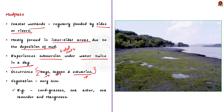Note that mud flats often have very less vegetation. Some of the salt marsh plants like cord grasses, sea aster and sea lavender are capable of growing in mud flats. Mangroves are also capable of growing in mud flats.